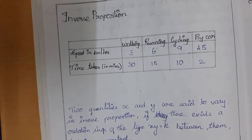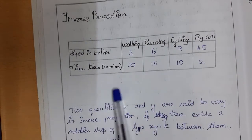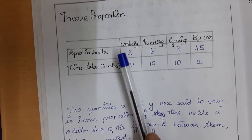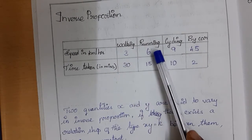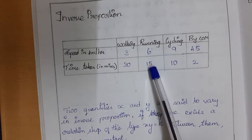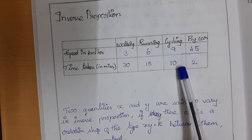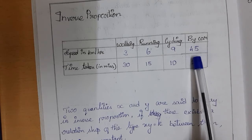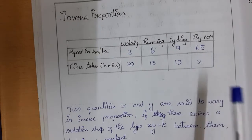Today we are going to learn about inverse proportion. Here is an example covering a certain distance with different speeds. Walking at 3 km/hr takes 30 minutes, running at 6 km/hr takes 15 minutes, cycling at 9 km/hr takes 10 minutes, and by car at 45 km/hr it can be covered in just 2 minutes.